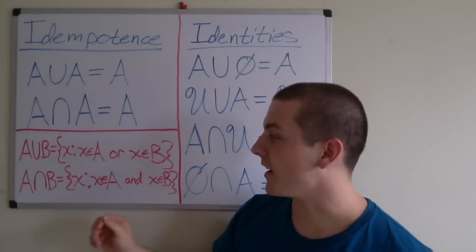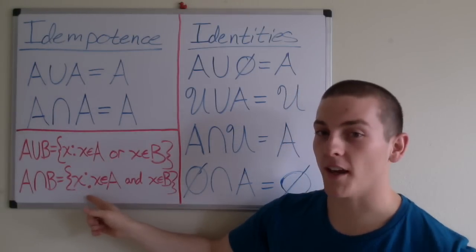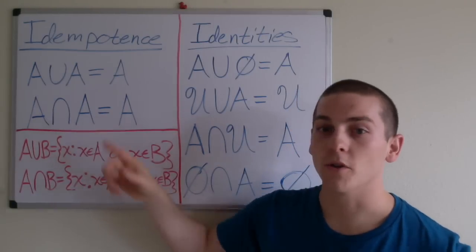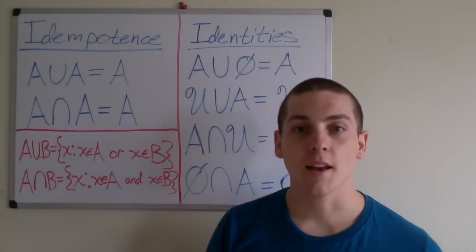Also, A intersection A equals the set containing elements x such that x is an element of A and x is an element of A, which it should also be clear why that is the set A.